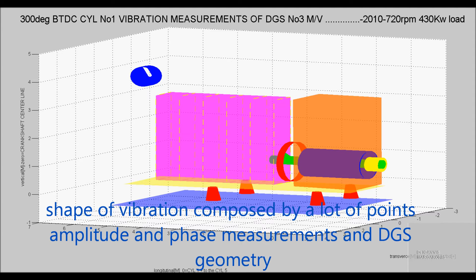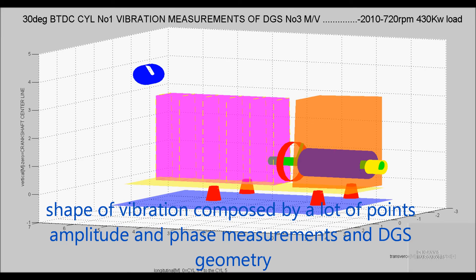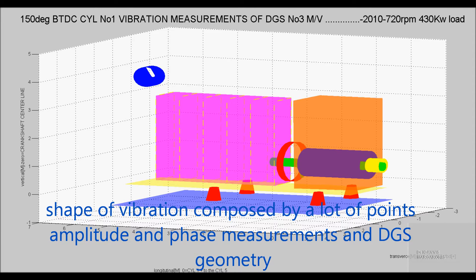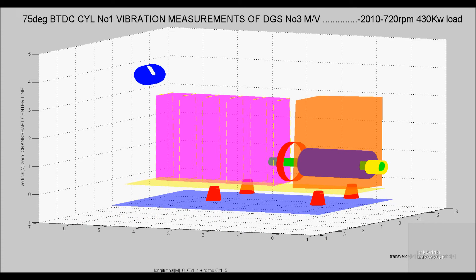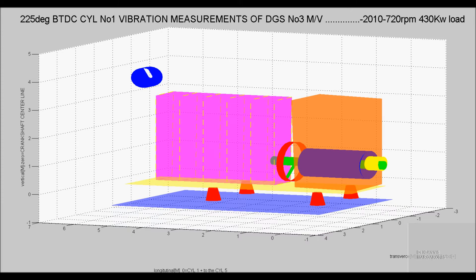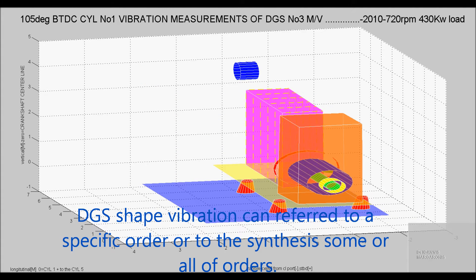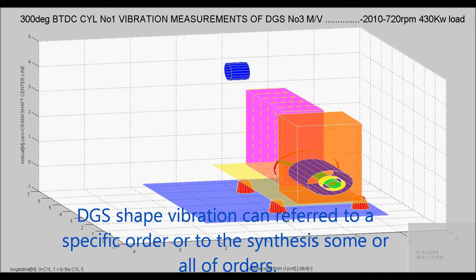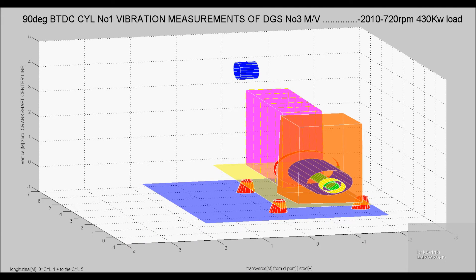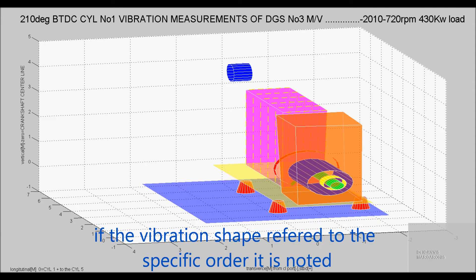The shape of vibration is composed of many points of amplitude and phase measurements combined with the DGS geometry. DGS vibration shape can refer to a specific order or to the synthesis of all orders.